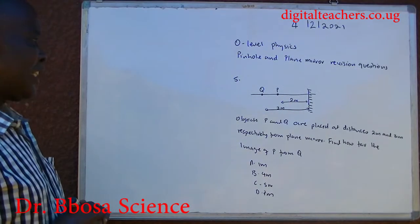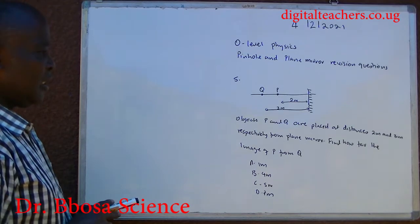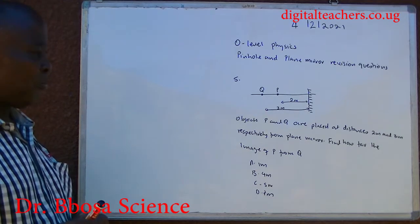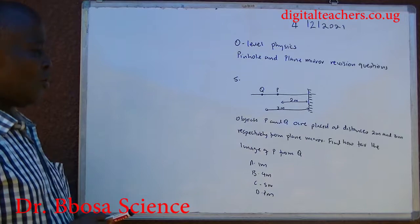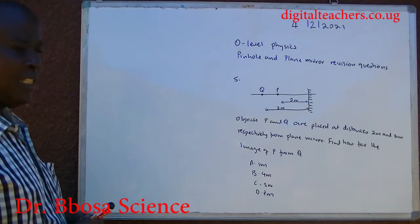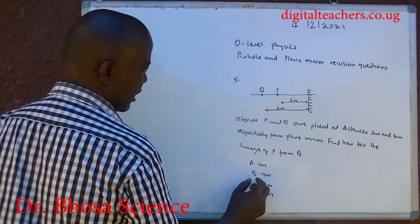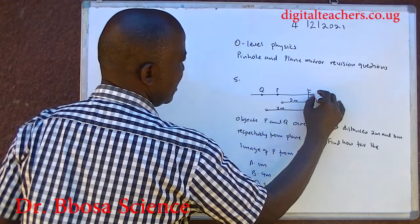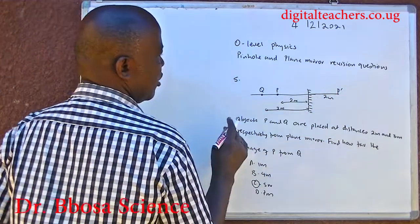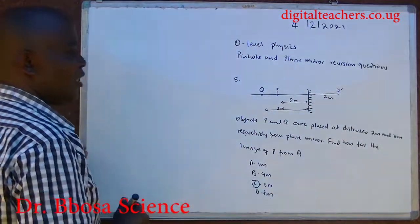Number five: objects P and Q are placed at distances two meters and five meters respectively from a mirror. Find how far the image of P is from Q. A, one meter; B, four meters; C, five meters; D, seven meters. You can pause and answer. The answer is C. The image of P is two meters behind the mirror. So this is two plus three, giving us five.